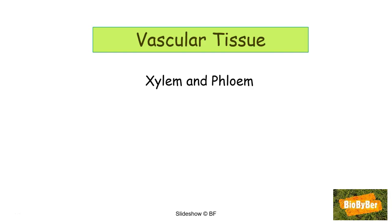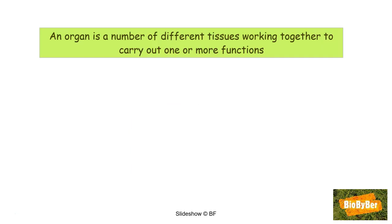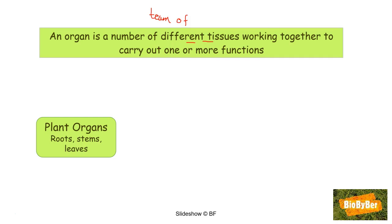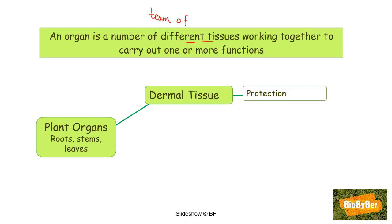Let's try to understand the organization of the parts of the flowering plant by looking at vascular tissue — xylem and phloem. An organ is a number of different tissues working together to carry out one or more functions. The plant has a shoot system and a root system; systems are made of organs. The root system was made up of the main root organ and secondary roots. Organs are made of tissues.